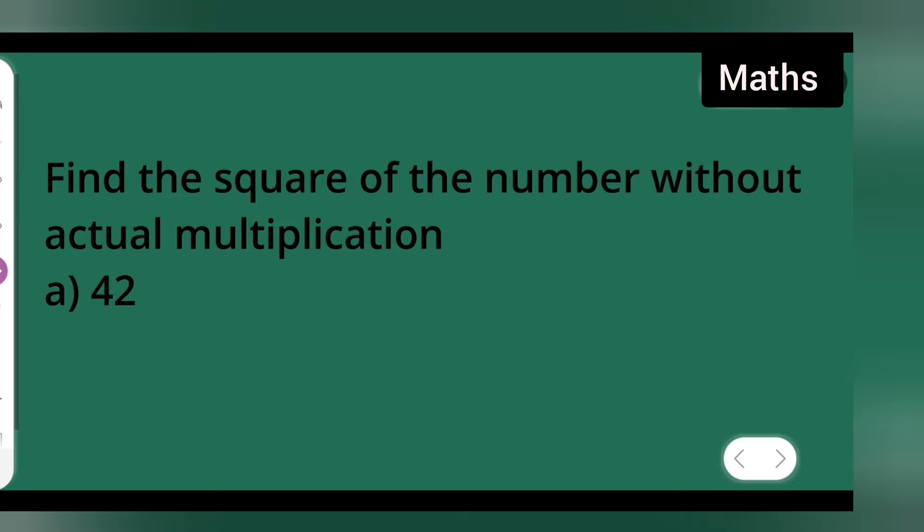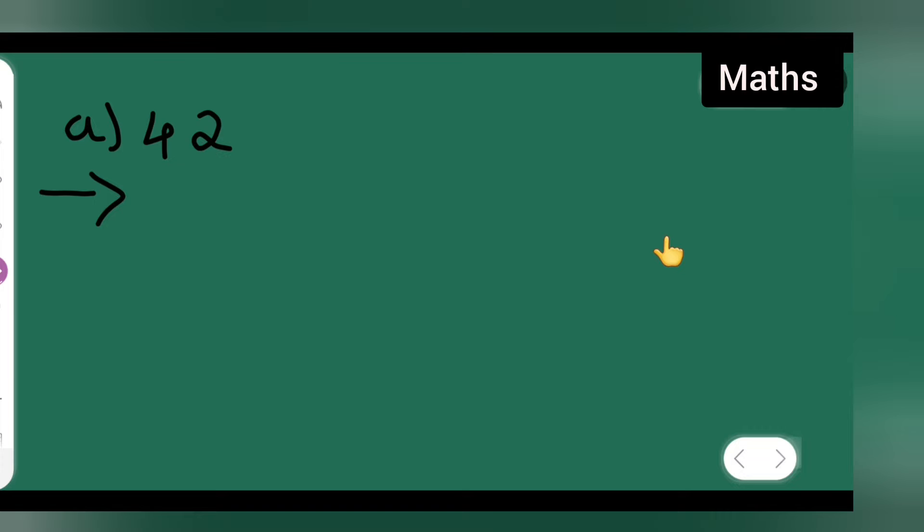Let us see how to do it. What you'll have to do is find the square of this number, 42 squared. So what I'm going to do is write 40 plus 2, split it to the nearest 10. What I have done here is split this, 40 plus 2 will give you 42, and then square this term.